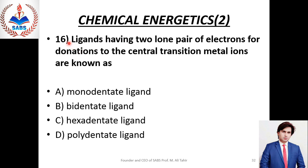Next question No. 16: Ligands having 2 lone pairs of electrons for donation to the central transition metal ions are known as — ایسے ligands جو 2 lone pairs donate کرتے ہیں انہیں bidentate ligands کہتے ہیں۔ اگر ligand ایک electron pair donate کرتا ہے تو monodentate کہتے ہیں، اگر 6 electron pairs donate کرتا ہے تو hexadentate کہتے ہیں۔ ہم سے پوچھا گیا ہے 2 lone pairs donate کرنے والے کو کیا کہتے ہیں — bidentate ligands۔ Right option is Beta.